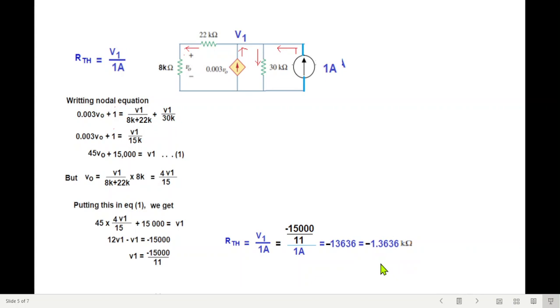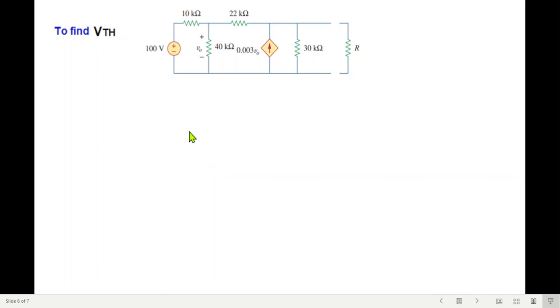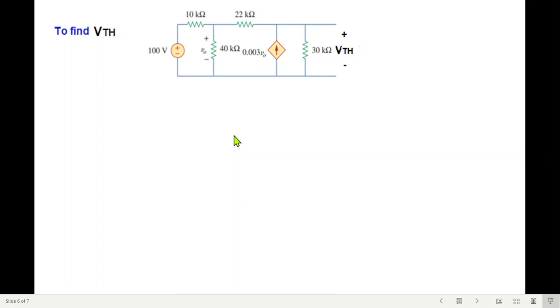R Thevenin is negative 1.3636 kilo ohm. Now we will find V Thevenin. We will follow similar technique, but in this case the source will be present there, not short circuit.